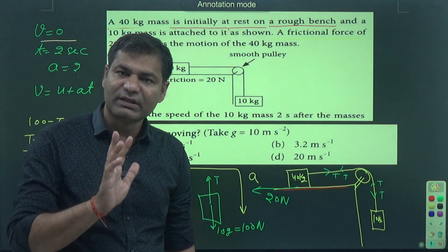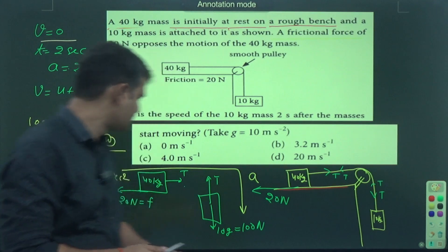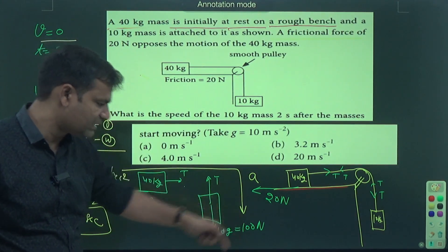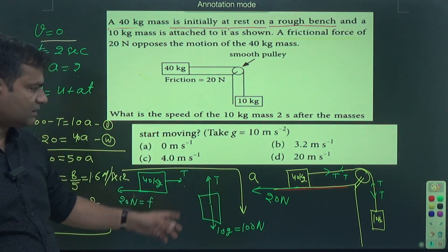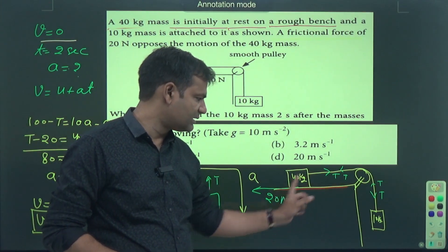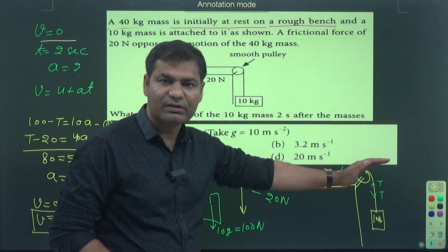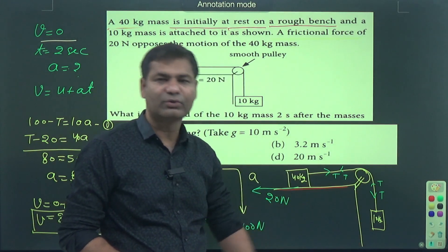If motion is allowed, then this one is going downward. This one is 20 Newtons, this one is 100. This one is greater than that one. This one is moving in this direction and this one is also going downward.